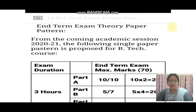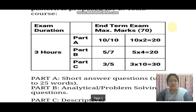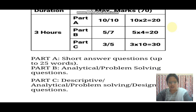Now, the Marks Distribution and Pattern of the Question Paper. According to the RTU, the end term exam theory paper pattern will have 3 different parts — Part A, Part B, and Part C — and the exam duration will be 3 hours. The marks distribution will be: 20 marks for Part A, 20 marks for Part B, and 30 marks for Part C. Part A will be short answer questions up to 25 words; Part B will be analytical or problem solving questions including numerical portions; and Part C will be descriptive, analytical or problem solving and design questions. On the basis of this pattern, I have listed out some important questions for you.